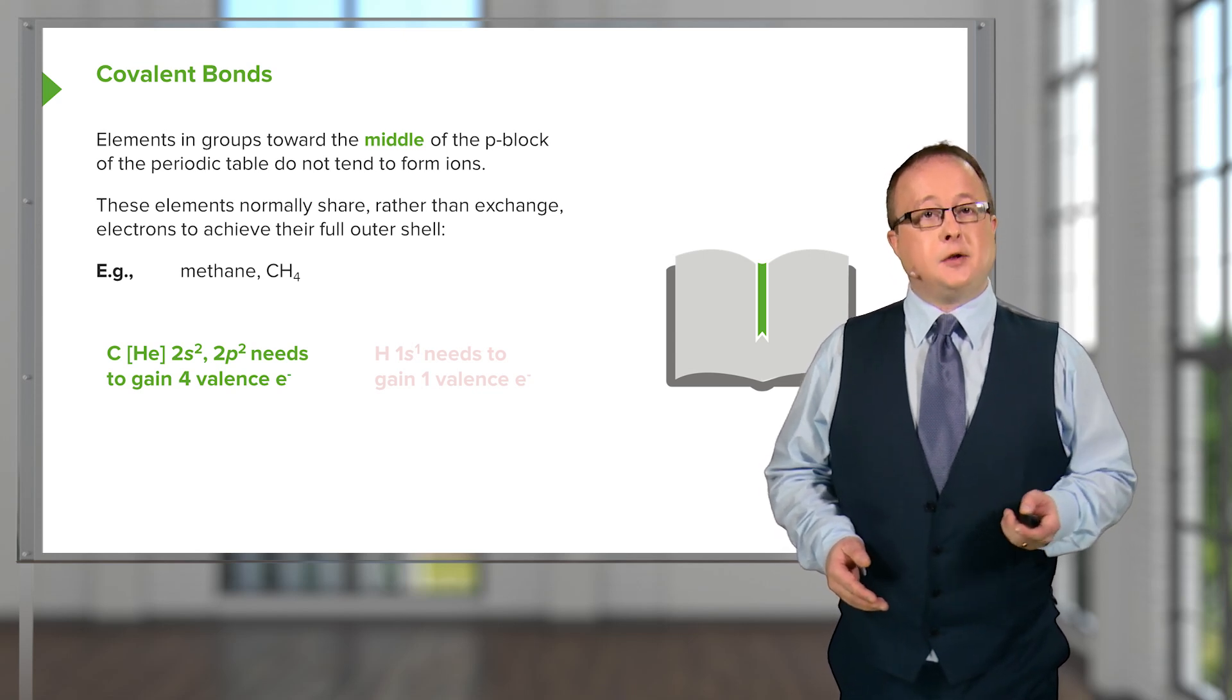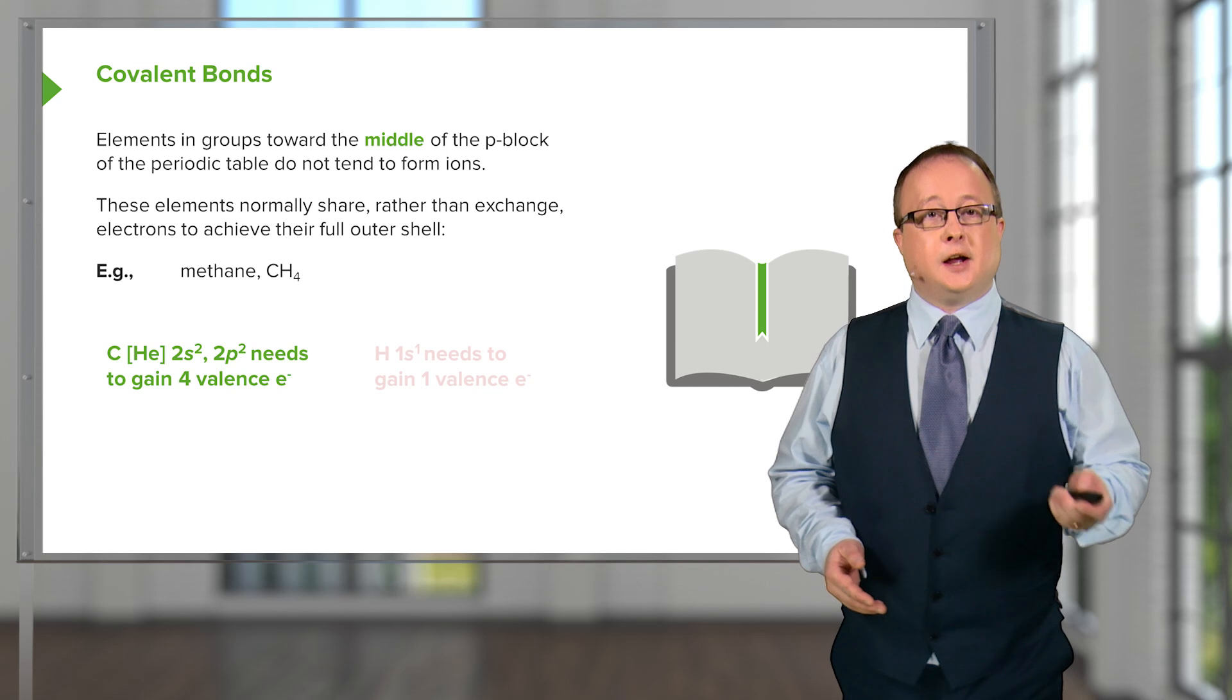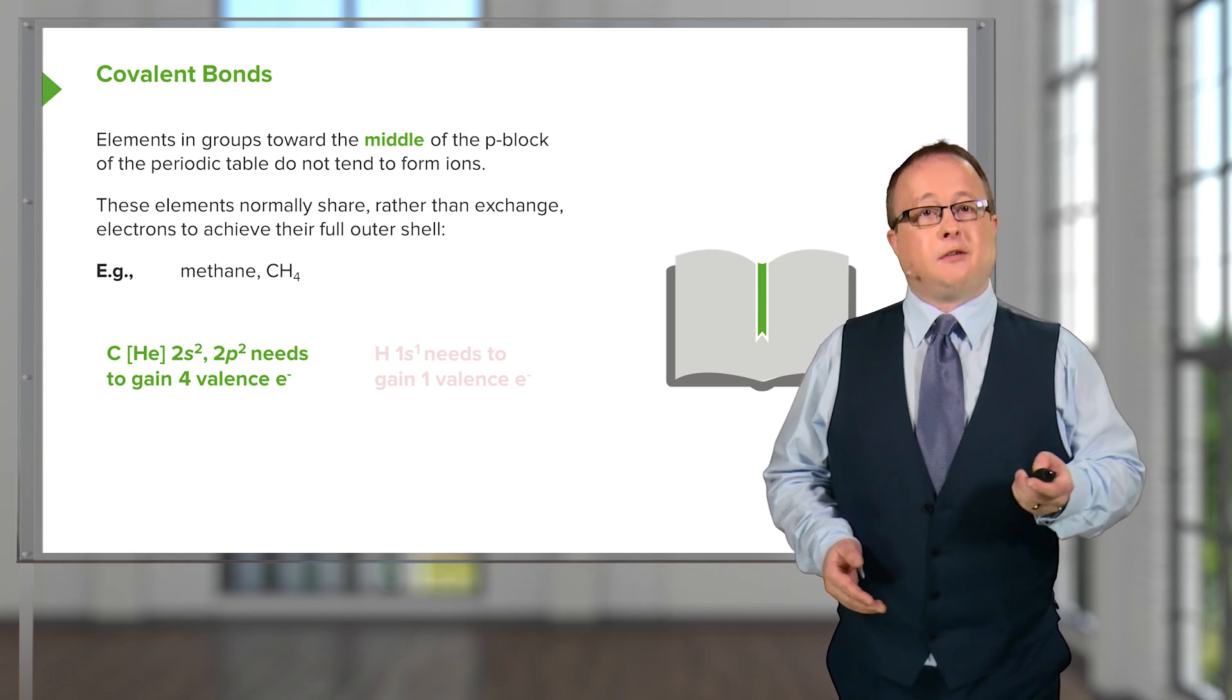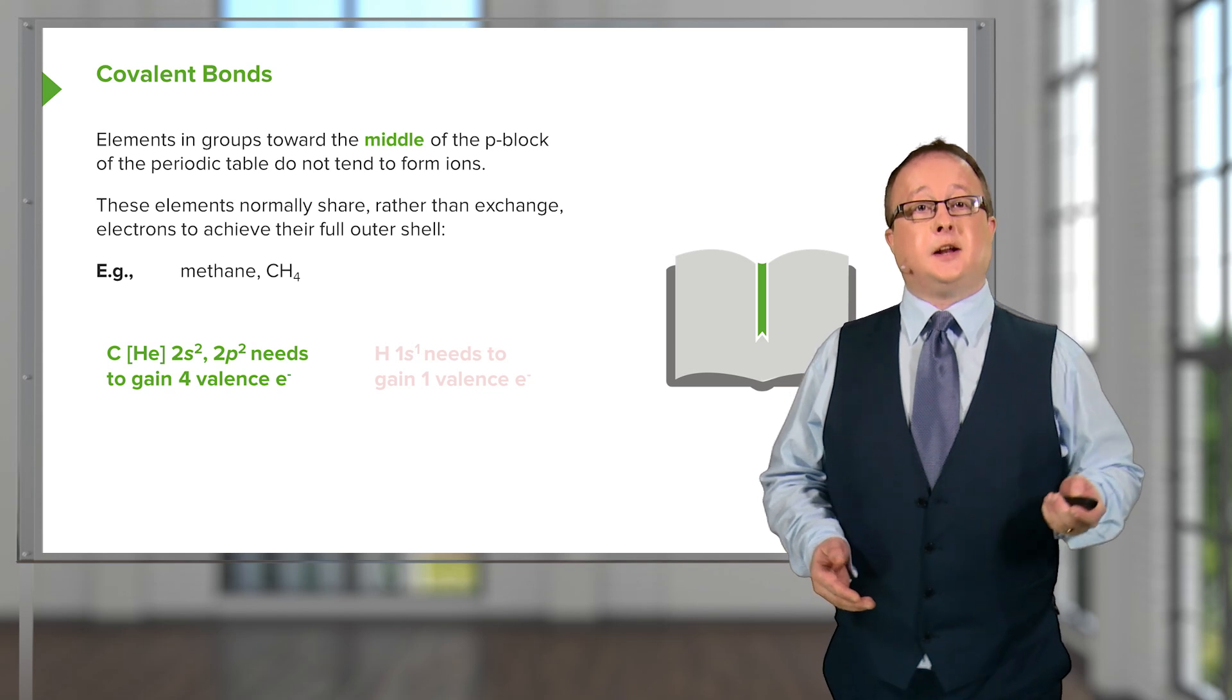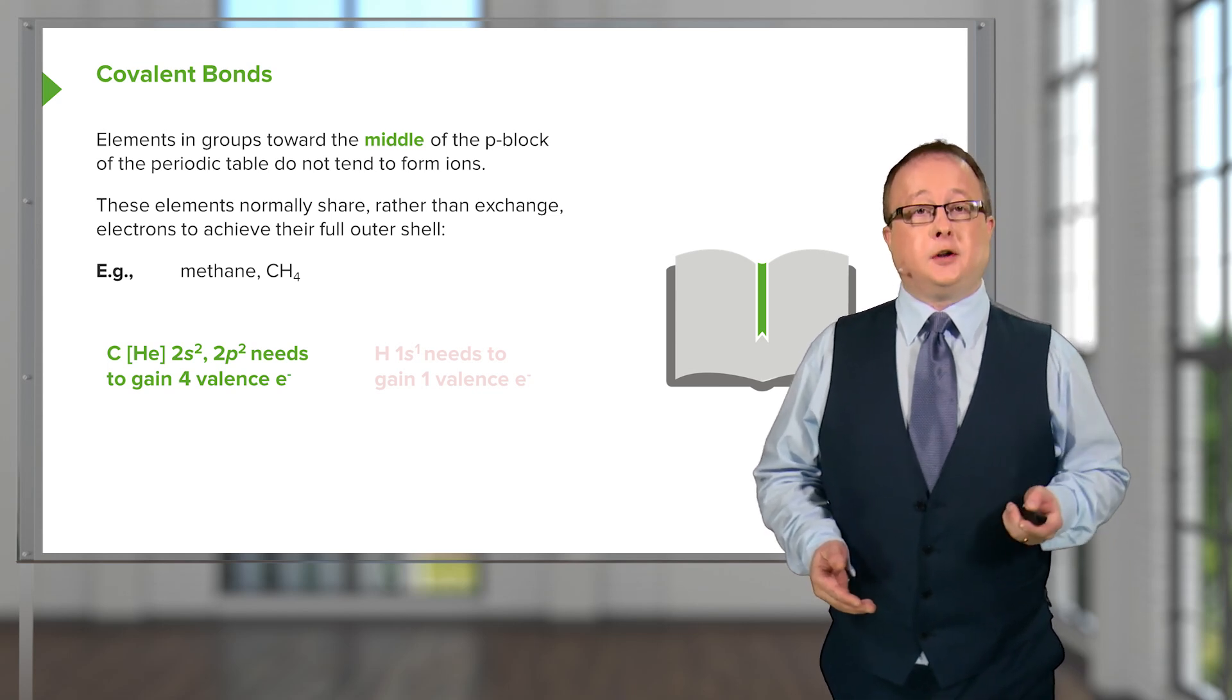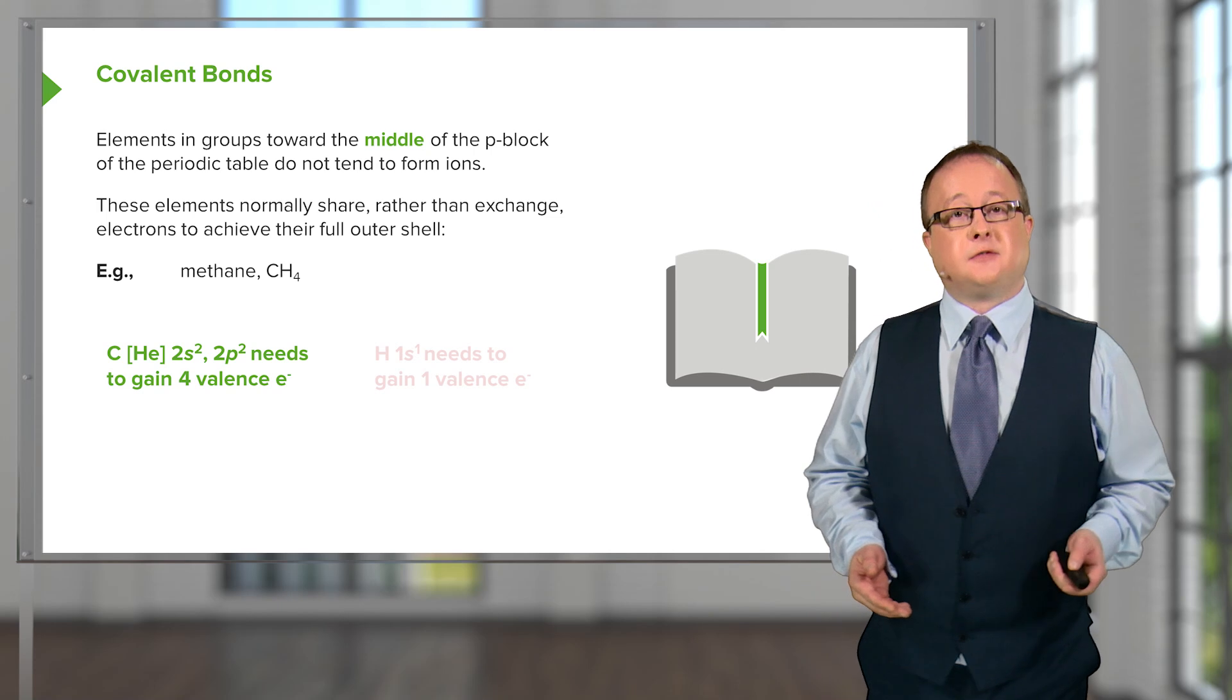If we look at carbon, again we're using the abbreviated form, so the helium nucleus, followed by 2s2, 2p2, we can see that it needs or requires four additional electrons to complete its valence shell.